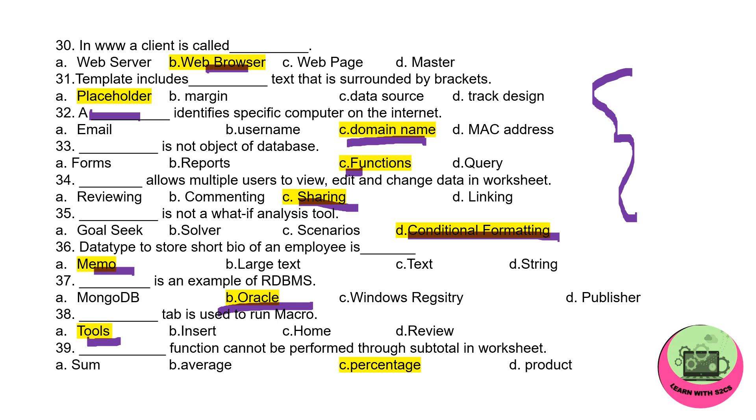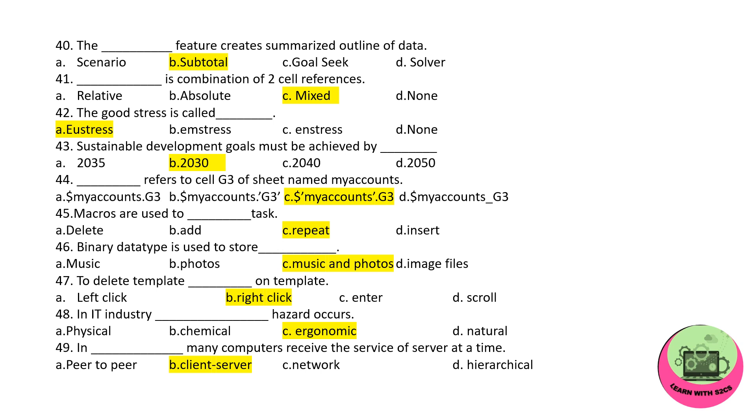Dash tab is used to run macro, so Tools menu. If you go to Tools menu, you can find the option Run Macros. Dash function cannot be performed through subtotal in worksheet. Now this is the important one: percentage you cannot perform. The default function which you can find in subtotal is sum. So that is one more thing you can note - sum is a default function used in subtotal and which is not used, that is percentage.